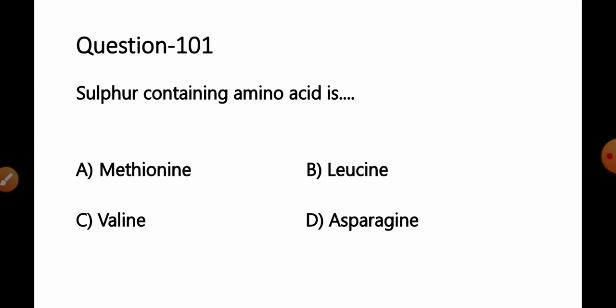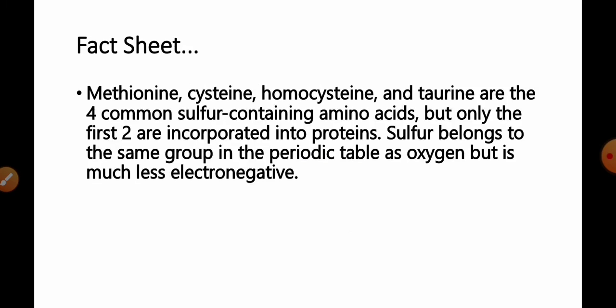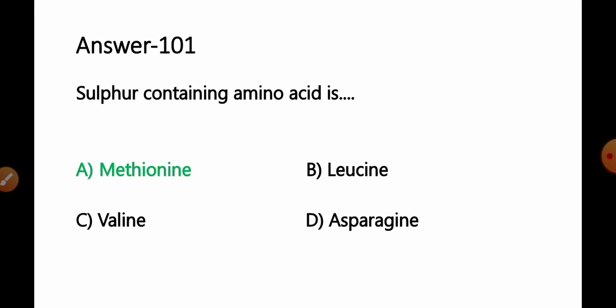Question 101: Sulfur containing amino acid is: A) Methionine, B) Leucine, C) Valine, D) Asparagine. Fact: This is a repeatedly asked question. Four amino acids—methionine, cysteine, homocysteine, and taurine—are common sulfur-containing amino acids, but only the first two, methionine and cysteine, are incorporated or involved in protein formation in the human body. Sulfur belongs to the same group in the periodic table as oxygen but is much less electronegative. From the options, methionine is a sulfur-containing amino acid. Option A is the correct answer.